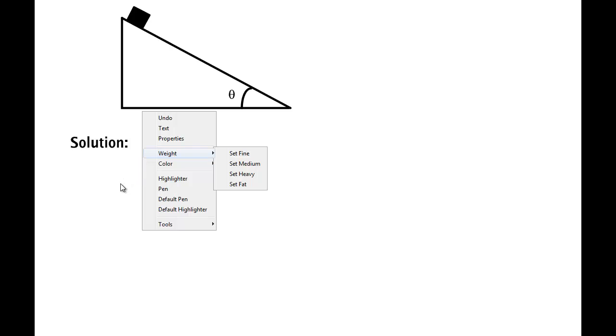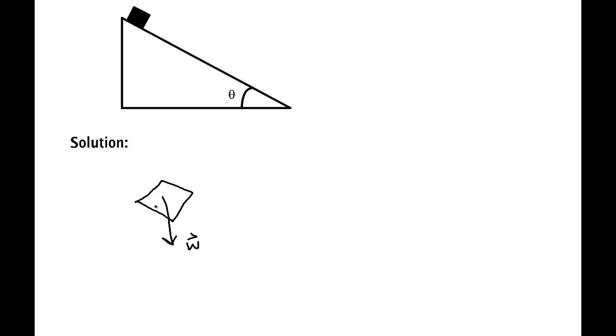First, draw a free body diagram. There's my block, I have weight going down, I have a normal force going up at an angle theta, and a friction force going this way. I know it has to be going that way because without friction this block would accelerate downward and begin to slide down. Like all inclined plane problems, I will find it convenient to lay my axis where the x direction lies along the incline.